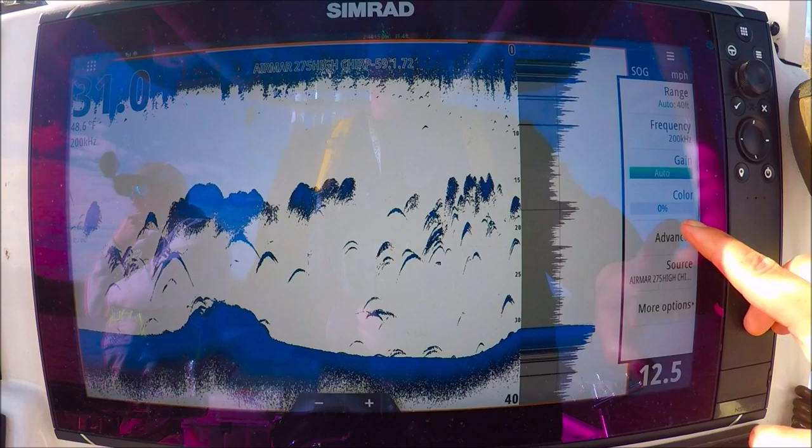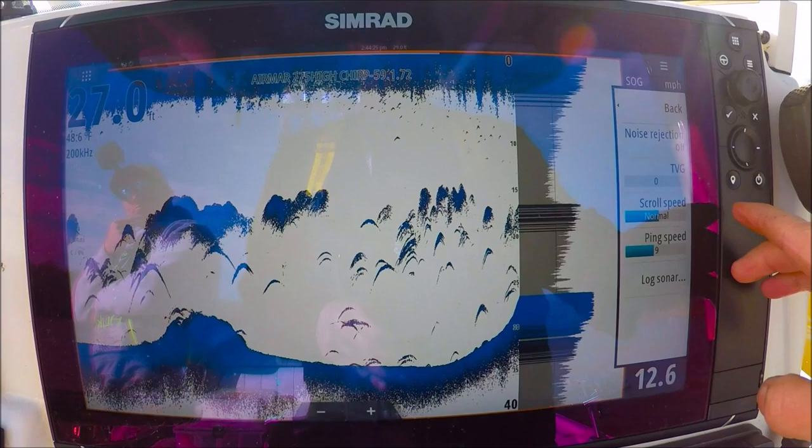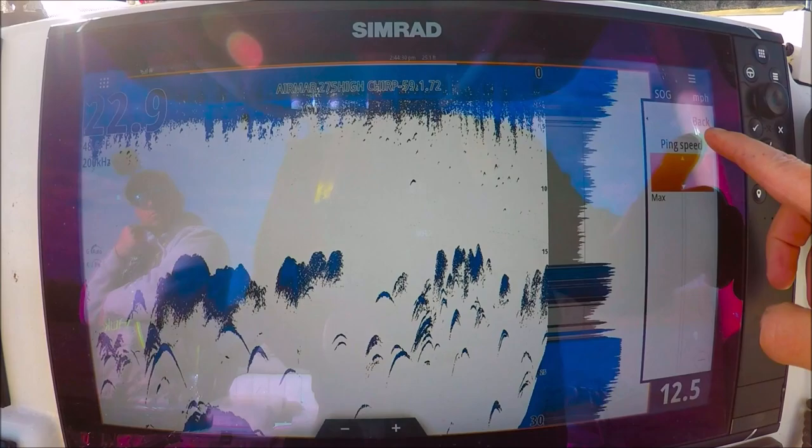Up here in my menu, I'm going to go to advanced, noise rejection off. I don't like noise rejection ever. I'd rather have a little noise on the screen than squash my returns by turning the filter on. TBG is zero, scroll speed normal, ping speed, you want to crank it up, all the way up.